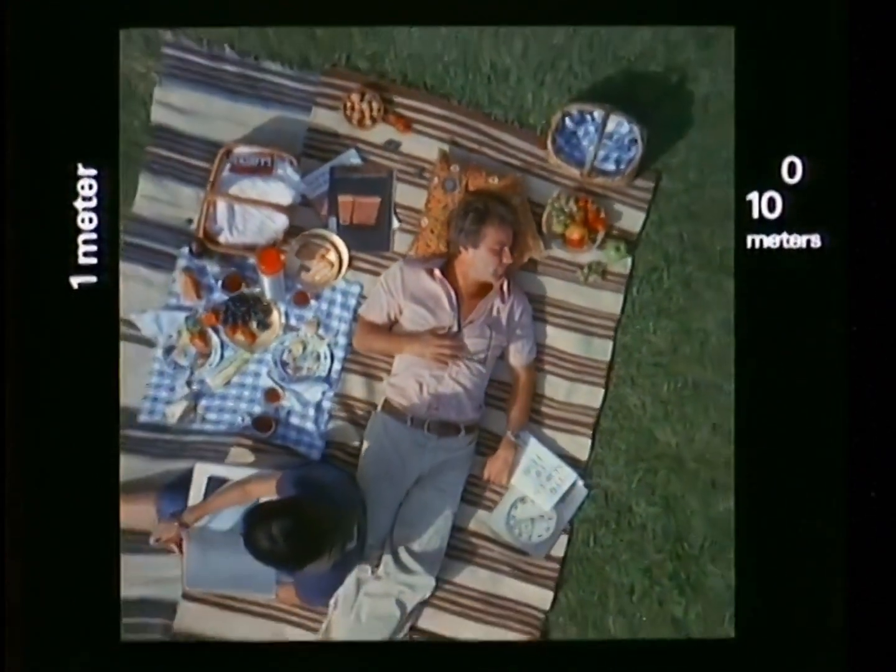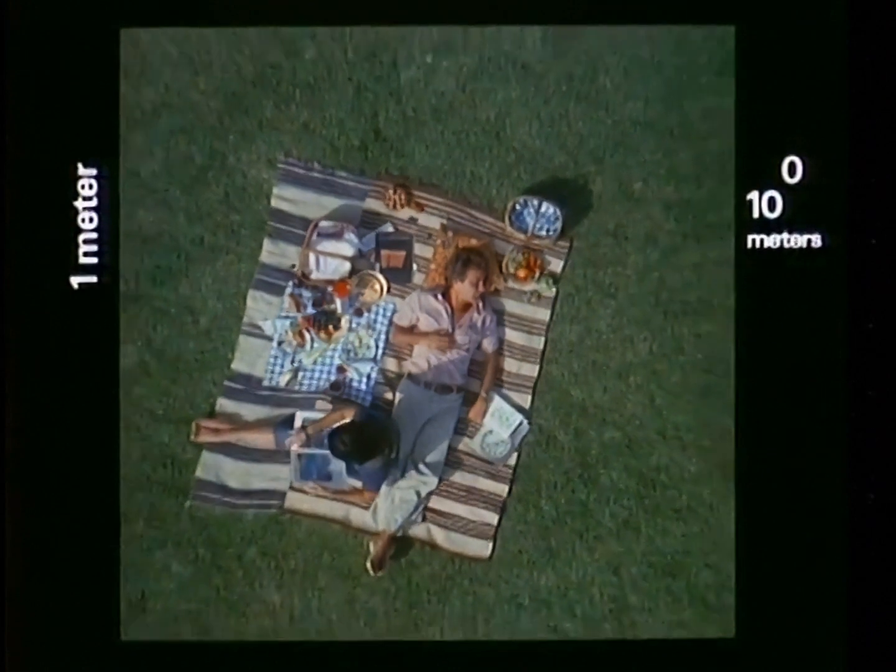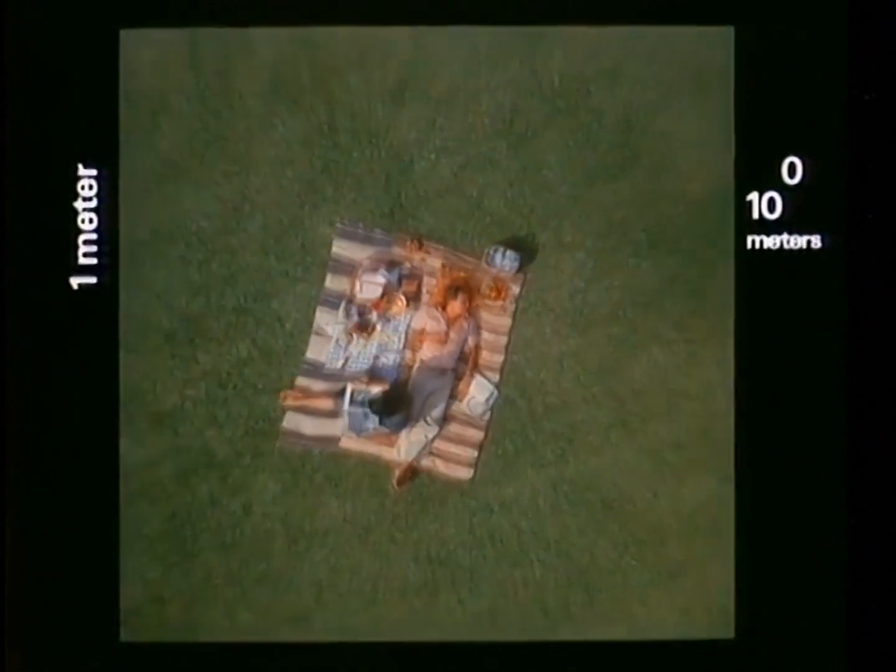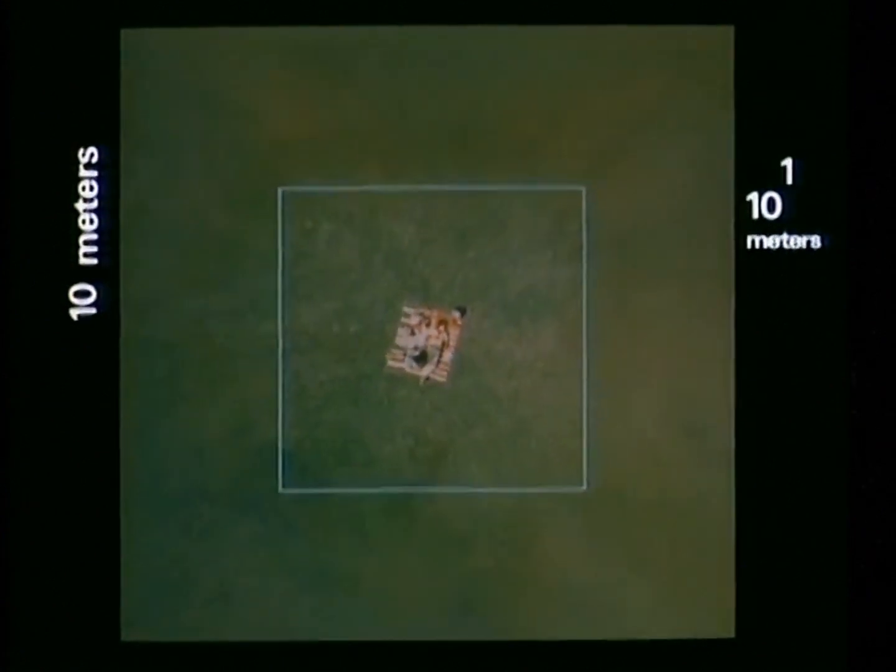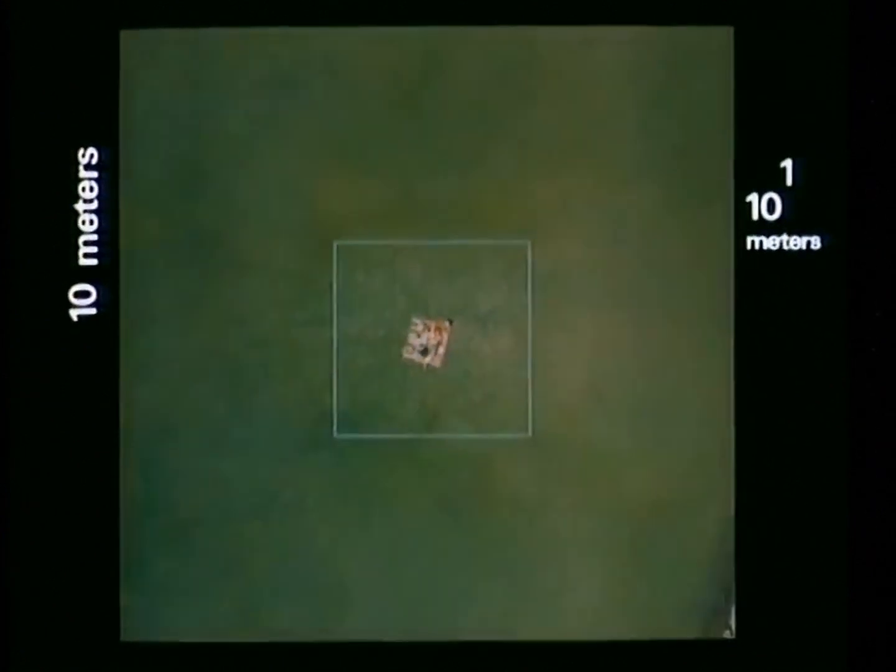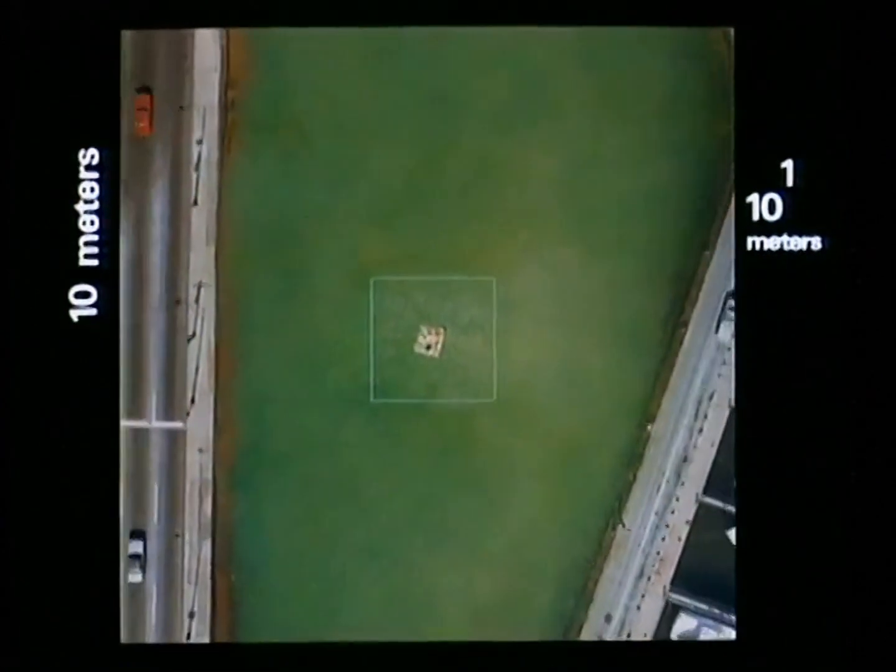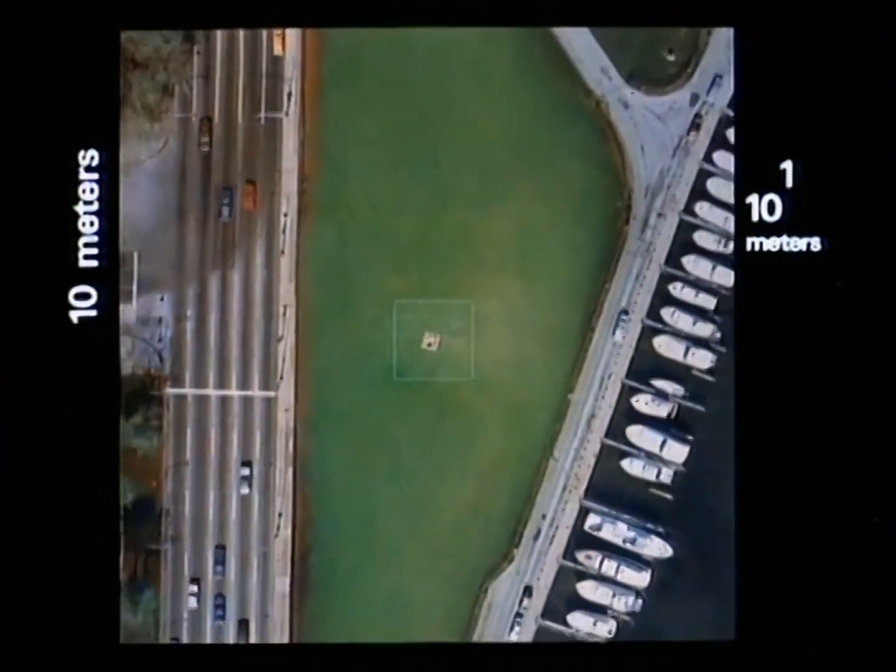Now every ten seconds we will look from ten times farther away, and our field of view will be ten times wider. This square is ten meters wide, and in ten seconds the next square will be ten times as wide. Our picture will center on the picnickers, even after they've been lost to sight.